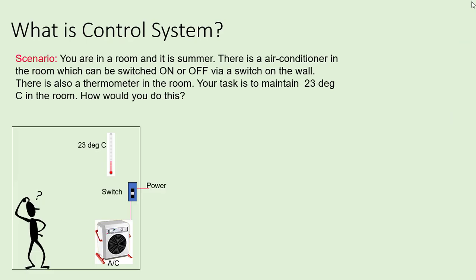To understand a control system, let us consider a scenario: you are in a room and it is summer. There is an air conditioner in the room which can be switched on or off via a switch on the wall. There is also a thermometer in the room through which you can observe the temperature. Your task is to maintain 23 degrees Celsius in the room.